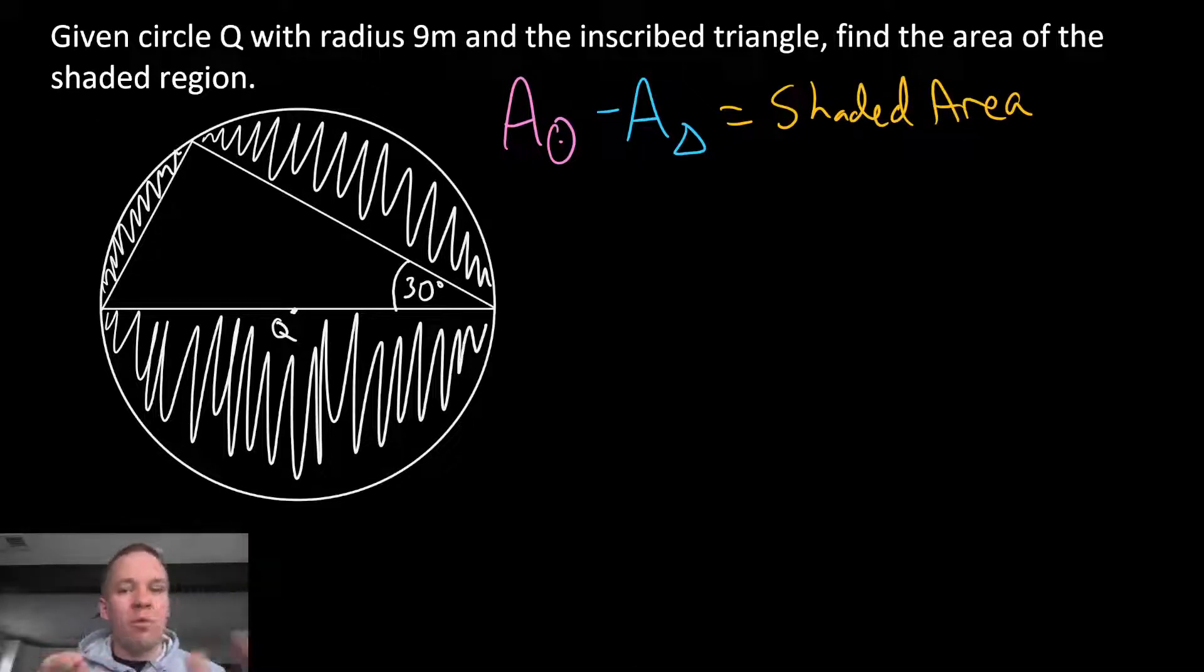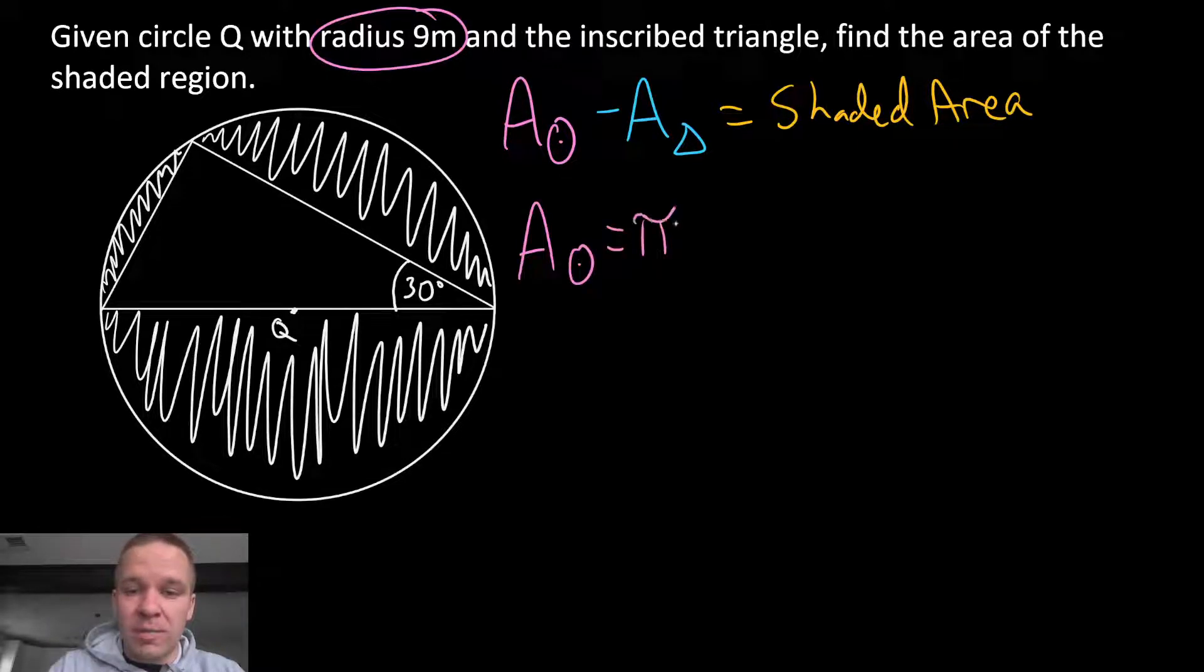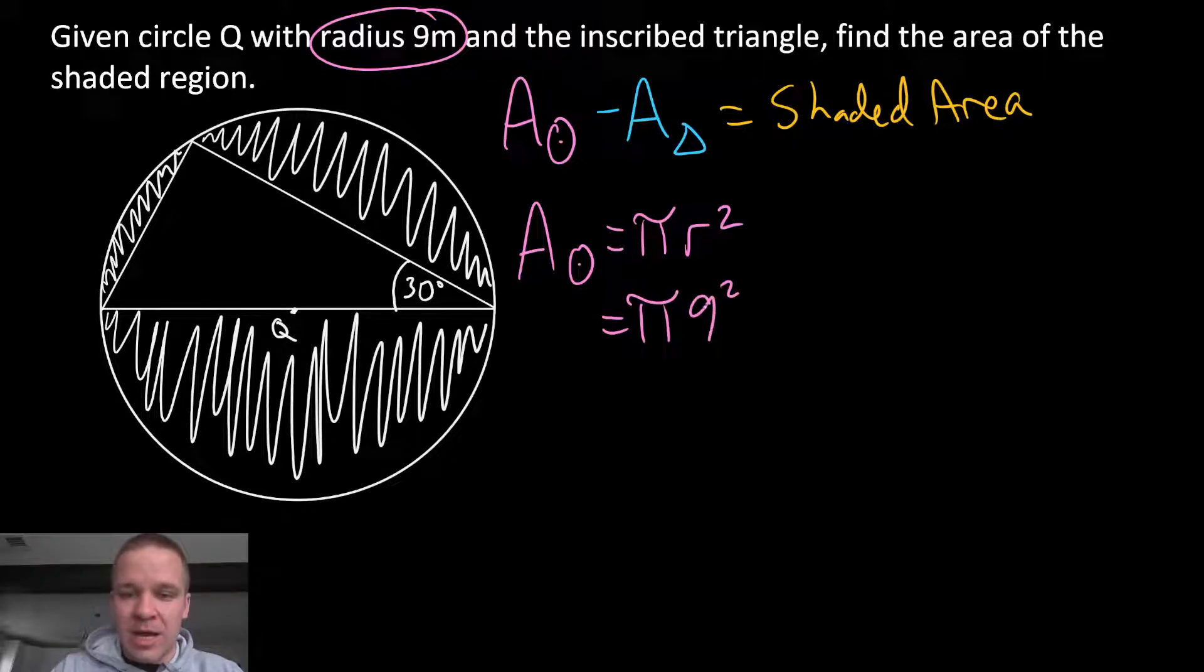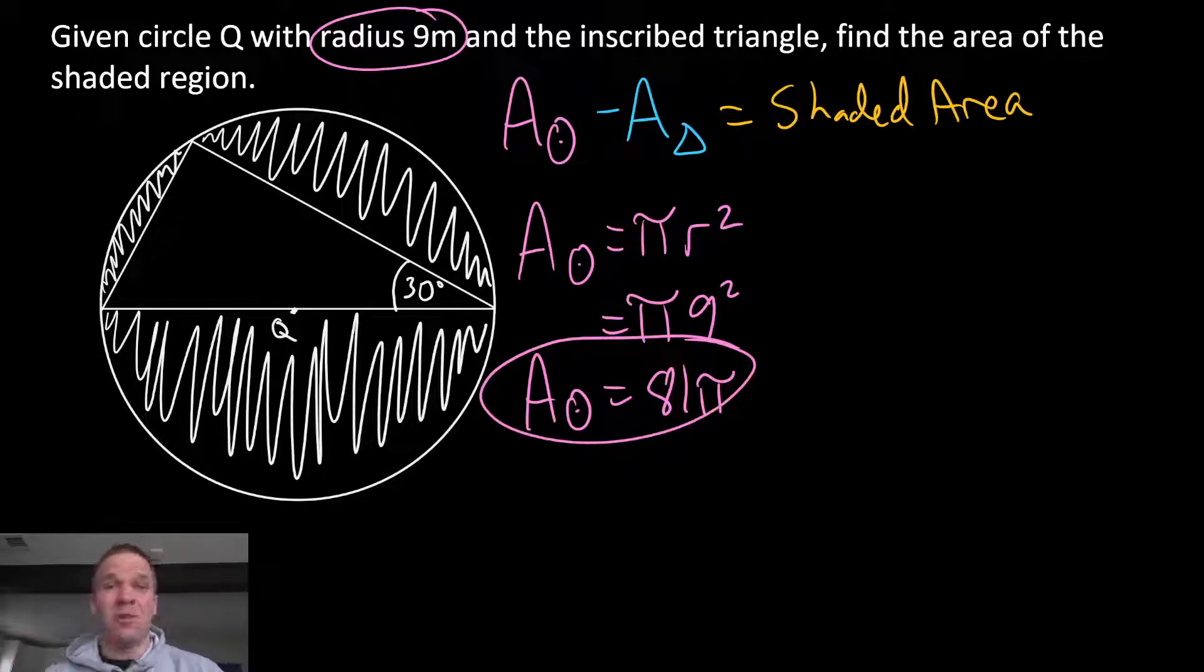Can I figure anything out right off the bat? Well, since I have a circle with a radius of 9 meters, and my formula for the area of a circle is just pi r squared, I'm set to go on this one. Let's plug in 9 for my radius, so 9 squared, that's gonna be 81 pi. That is my area of the circle, although not a final answer. I'm gonna circle it for now, just because that's an important part of this problem.